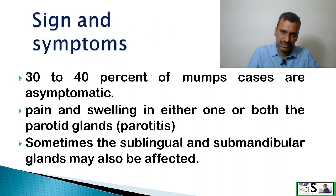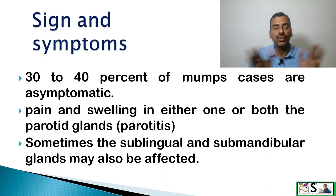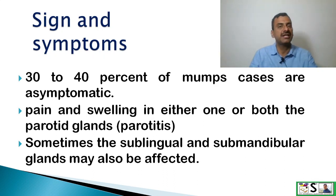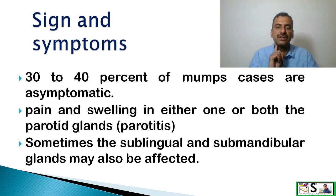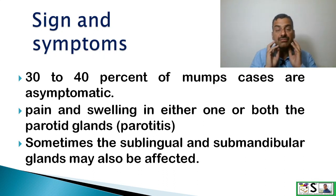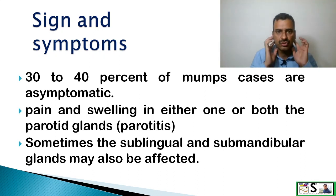Now, signs and symptoms. Actually, 30 to 40% of mumps cases are asymptomatic, meaning there will be no signs and symptoms. But they can still spread infection. When signs and symptoms do appear, they may include pain and swelling in either one or both parotid glands, with swelling and pain visible in that region.